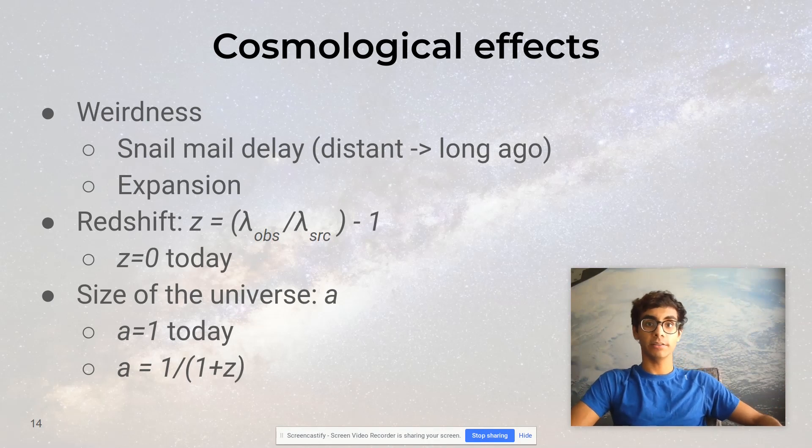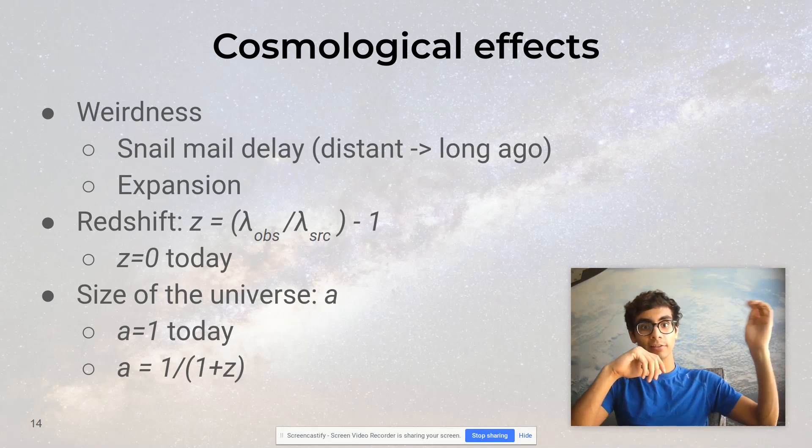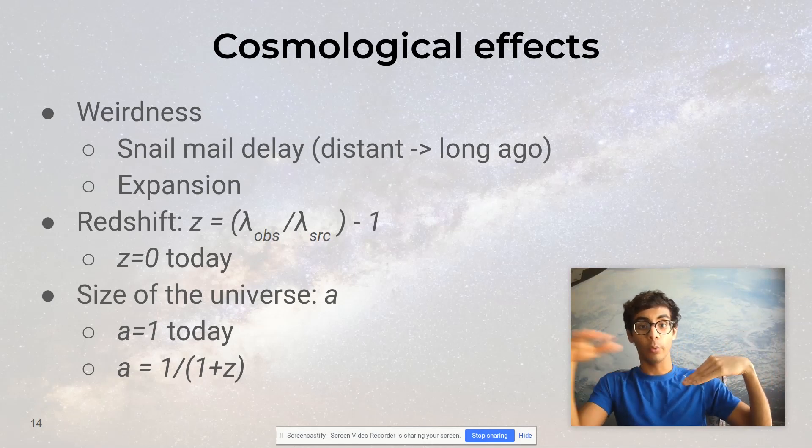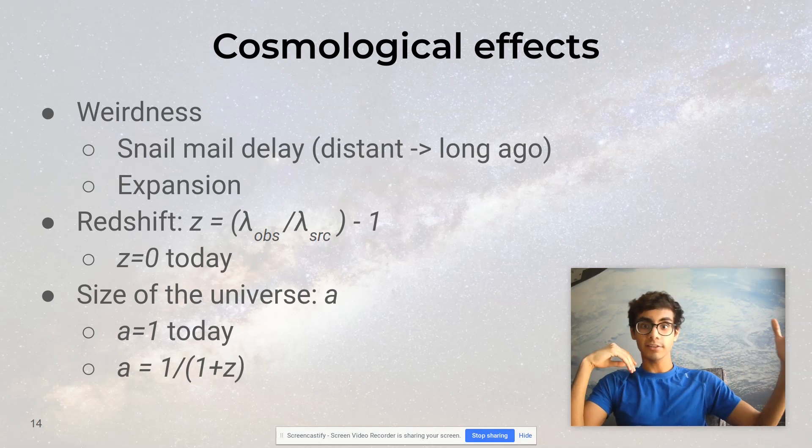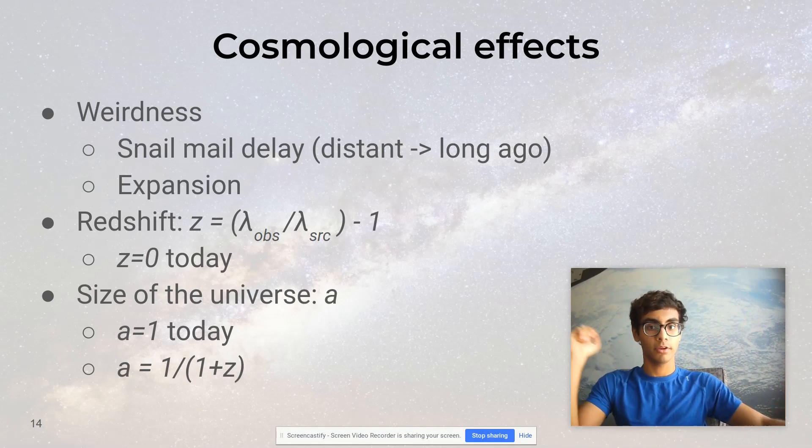Redshift usually happens because of the Doppler effect. It's the same reason a fire truck siren is at a lower pitch when the truck is moving away from you. In this case, the velocity of the object causes the wave to be stretched into a longer wavelength. Many times, this is the source of redshift in astronomy.